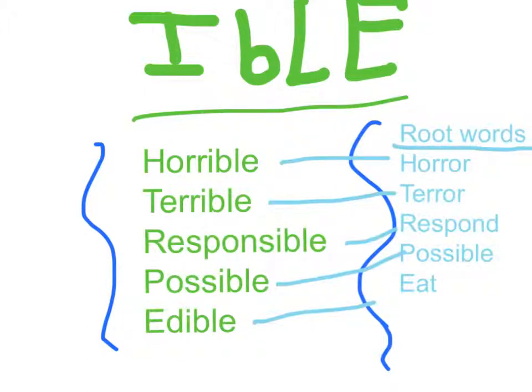The root word of horrible is horror. Terrible - the root word of terrible is terror. Responsible is respond. Possible is possible. Edible is eat.